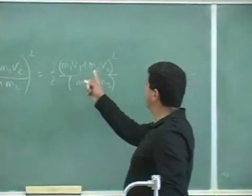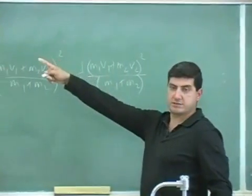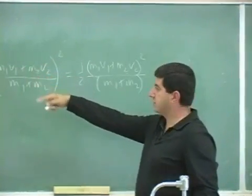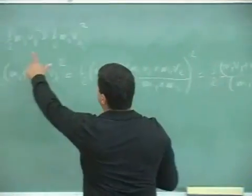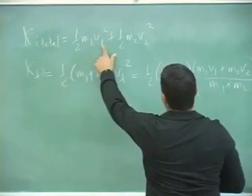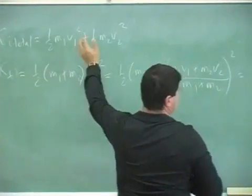Now it can be shown that this is less than that. Mathematically, this one is less than the half M1 V1 squared plus half M2 V2 squared.